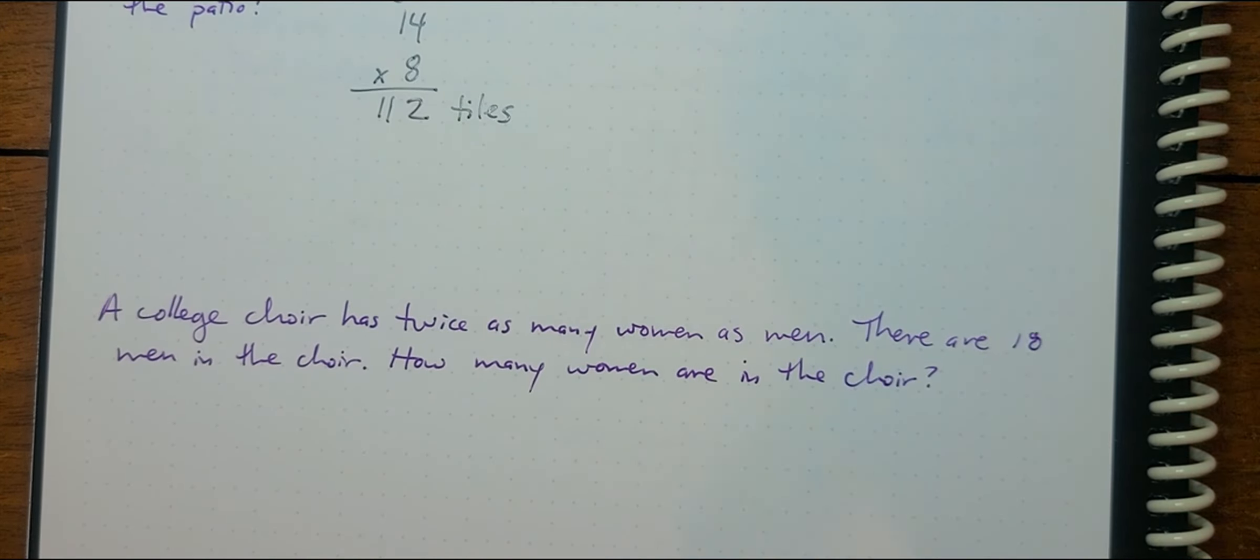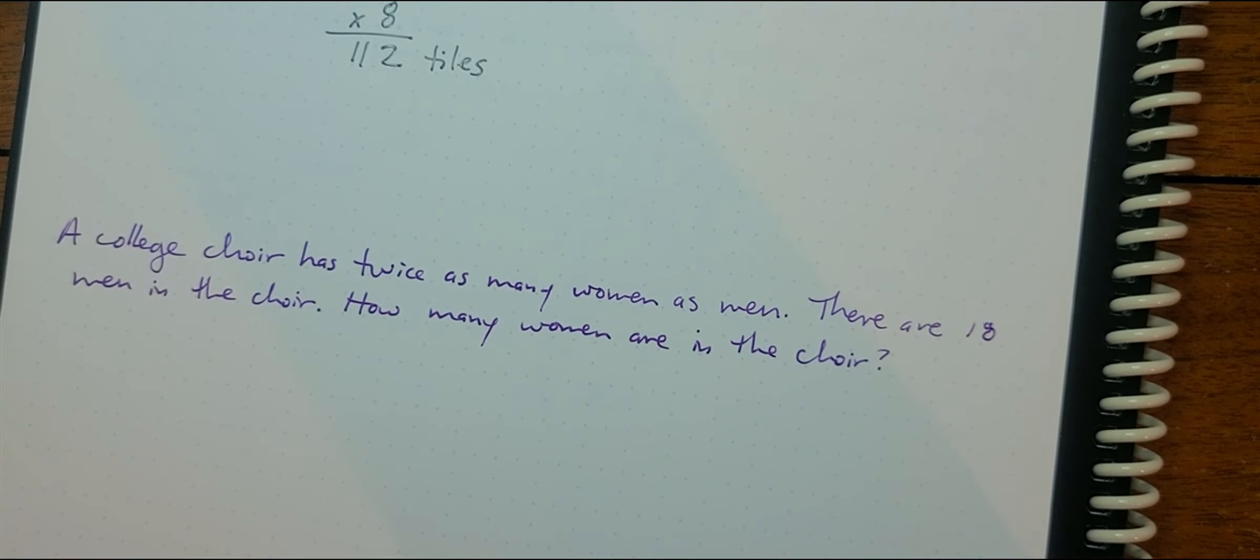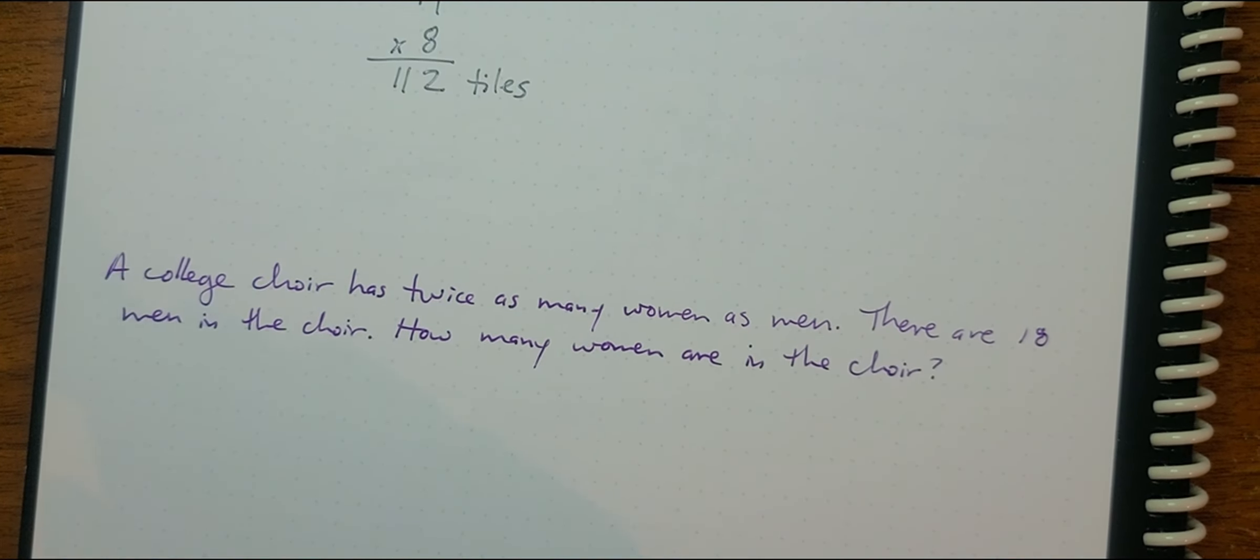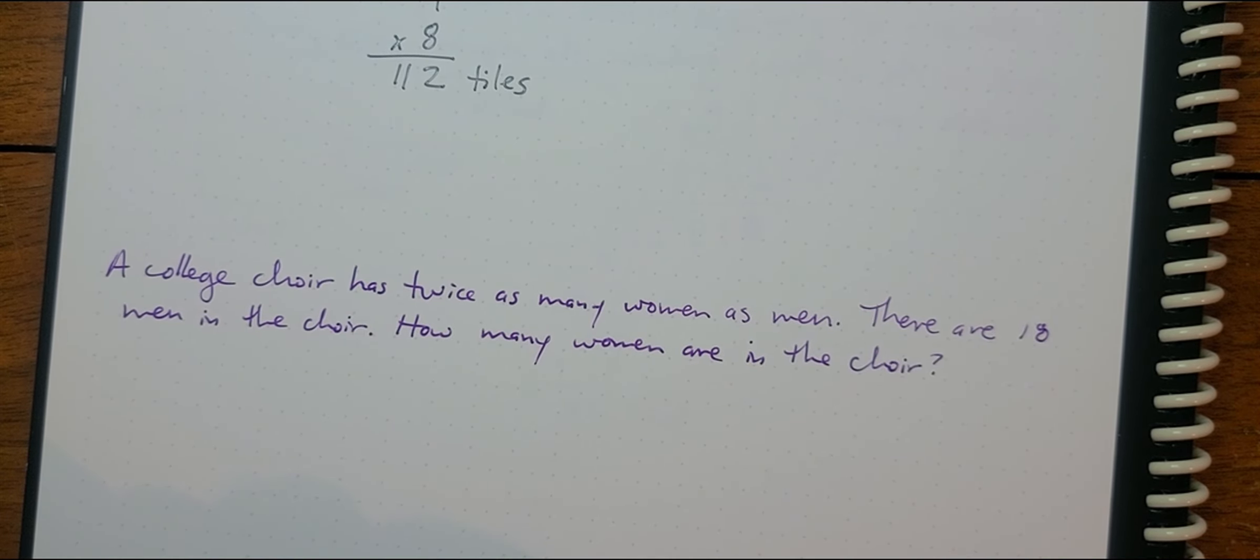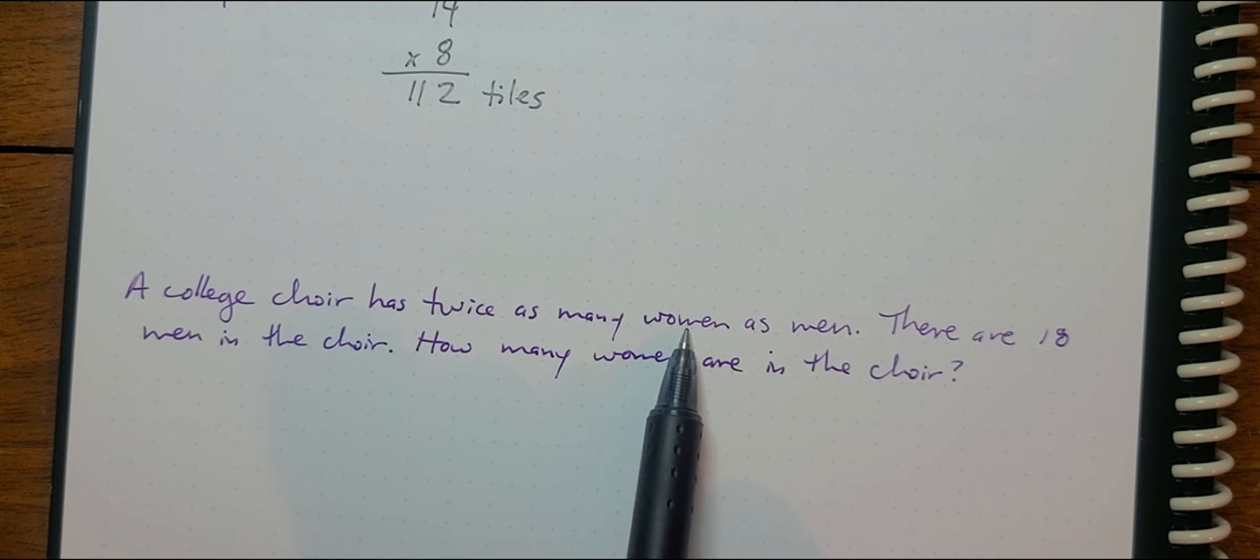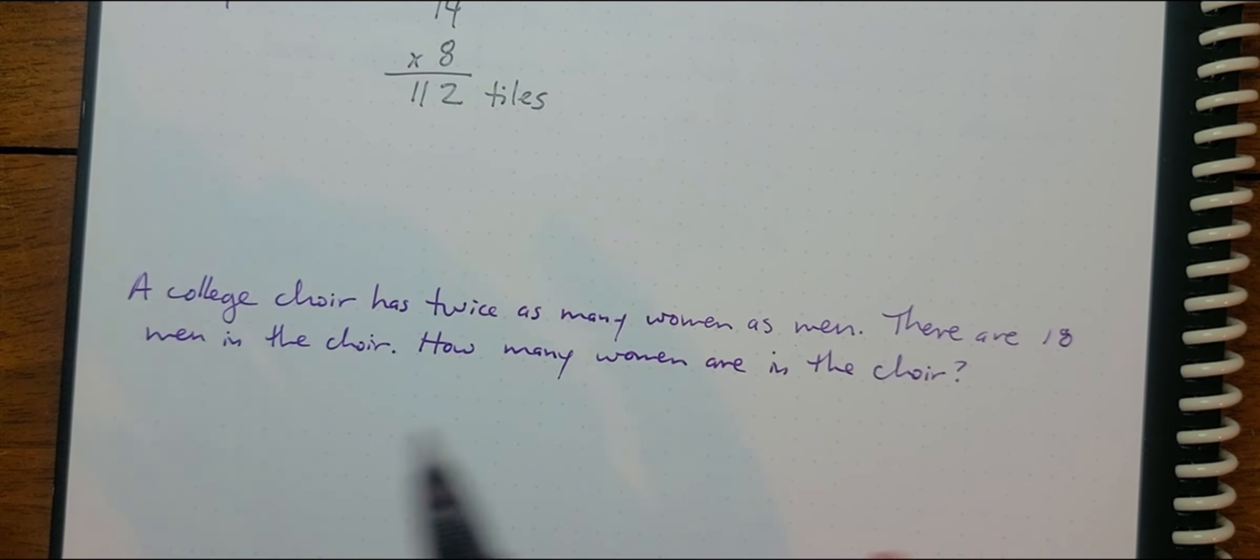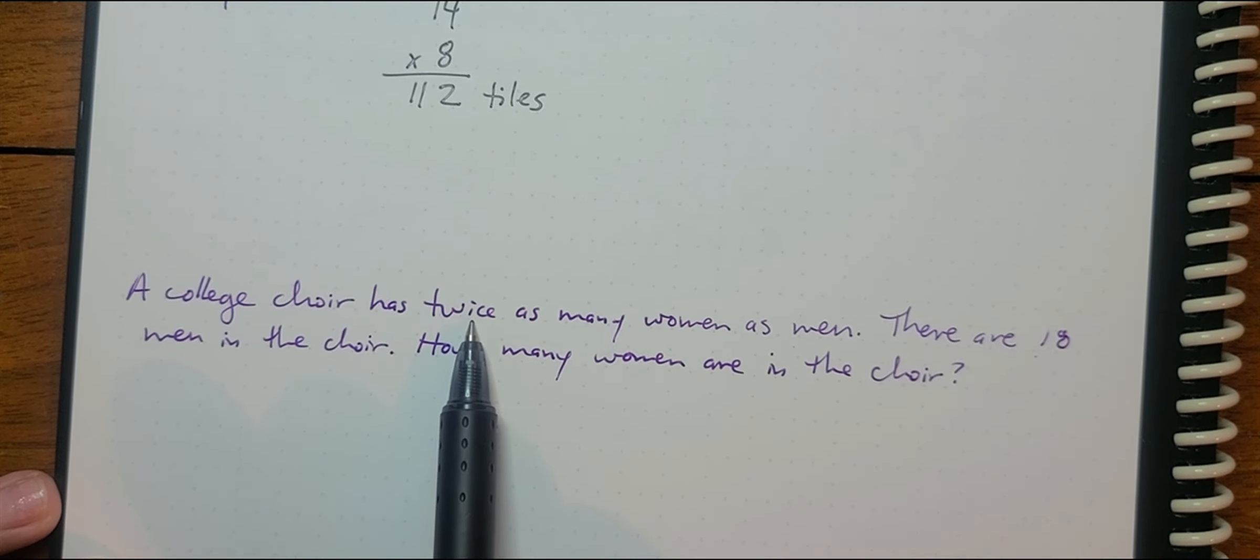I wanted to do this problem because I think it's some of the language that we ran into the other day. A college choir has twice as many women as men. There are 18 men in the choir. How many women are in the choir? So if we have twice as many women as men, that means we basically have double.